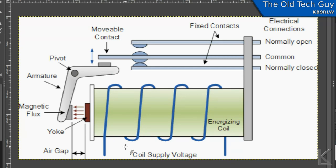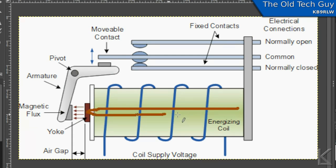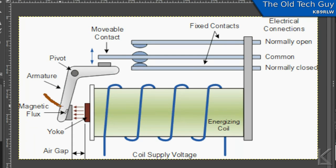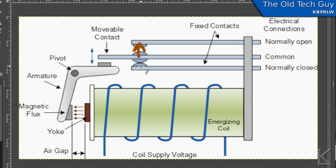What happens is your low voltage creates a magnetic field here on this core, and that magnetic field then pulls in this metal arm. When it pulls that in, that pushes up here because of a pivot, and it will switch this contact from one point to another point.